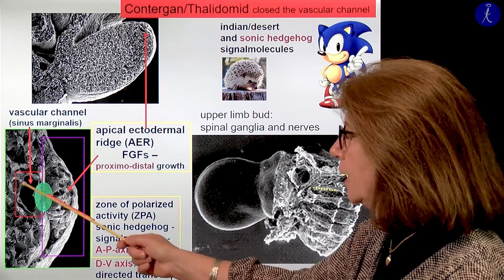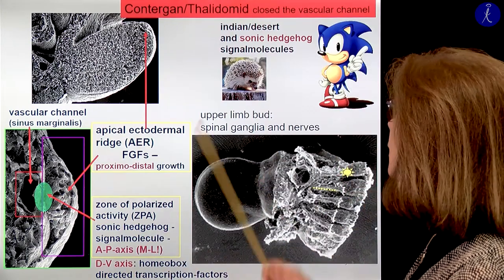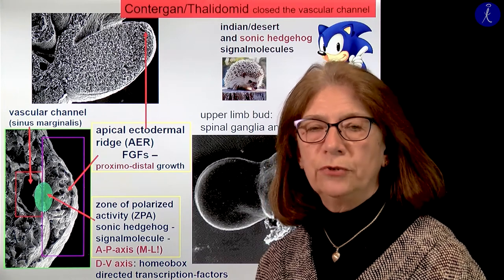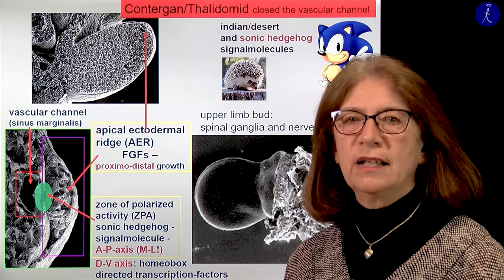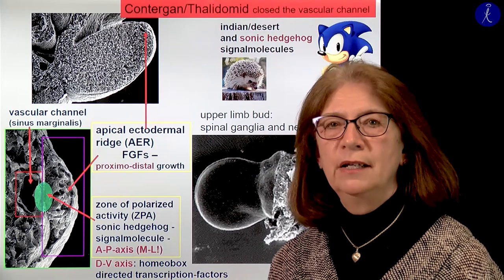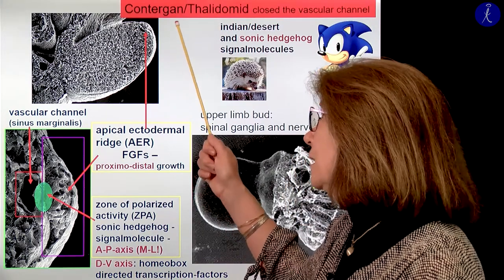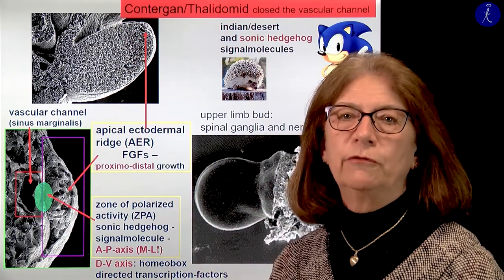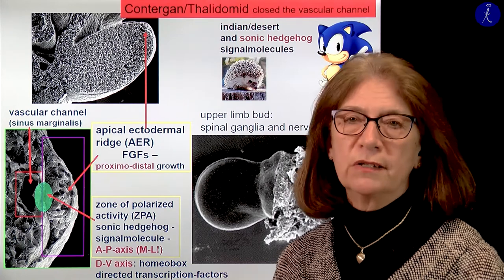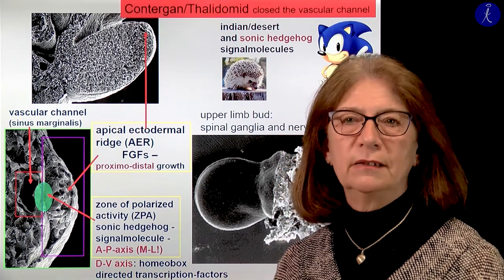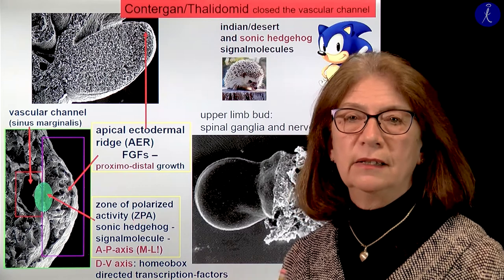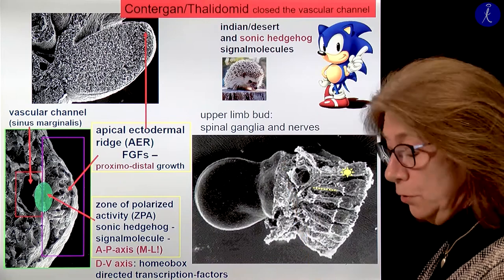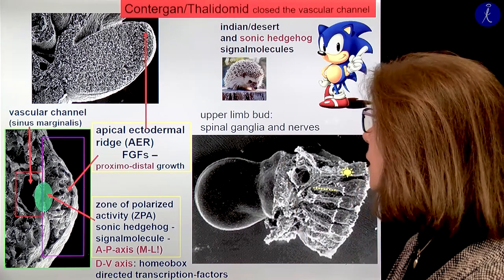If this vascular channel is closed — that happened in the 1950s and 60s, mostly in European countries like France and Germany — the vascular channel was closed due to a medication advised to women for morning sickness. And when do they have morning sickness? In the second month, exactly in that period when the limbs were developing. These were followed then by major malformations in the limbs.